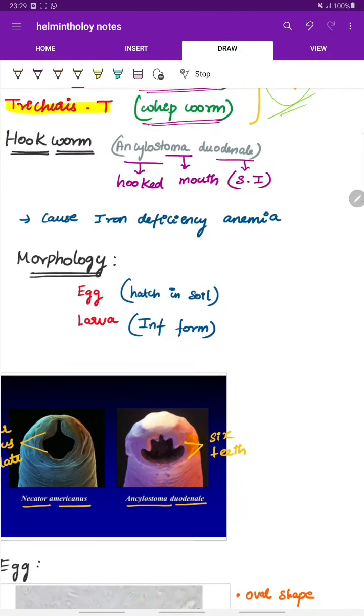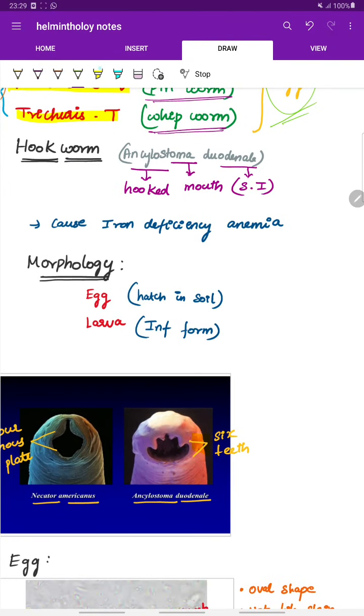Let's see about the hookworm, which is Ankylostoma duodenale. Here the word ankylo means hooked, stoma means mouth, duodenale because it lives in the duodenum which is a part of the small intestine. Important clinical manifestation of Ankylostoma duodenale is it causes iron deficiency anemia.